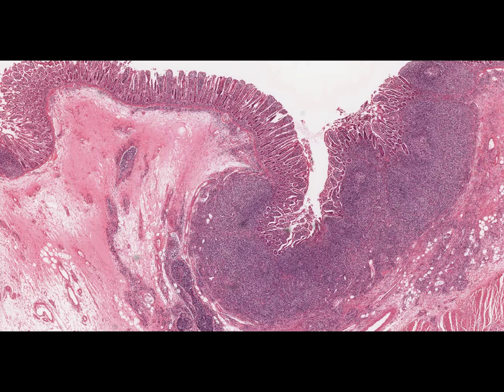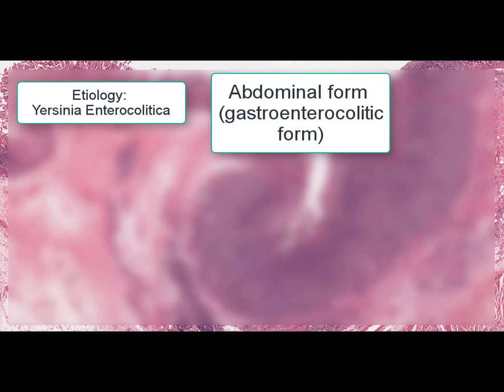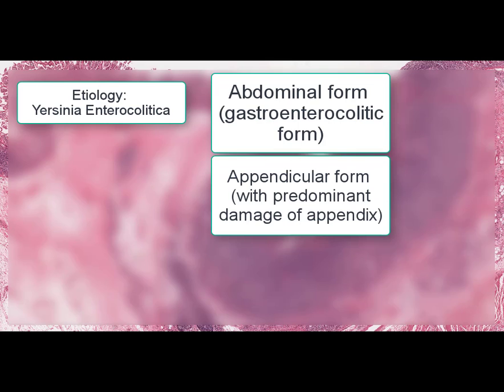The first is the abdominal or gastroenterocolitic form, when the stomach, small intestine, and part of the colon are affected. The second is the appendicular form, when the appendix is affected predominantly. And finally, the third one is the septic form.